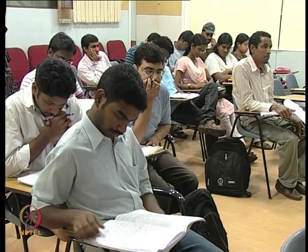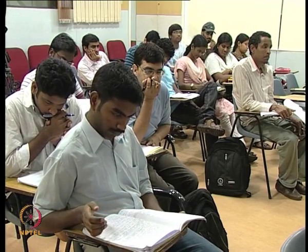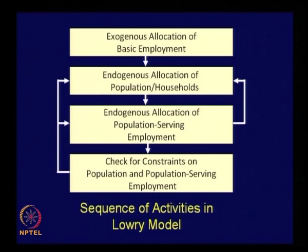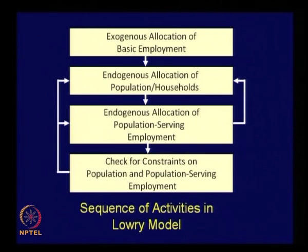The four important steps in the application of Lowry's model are shown in the flow chart. Step one: exogenous allocation of basic employment — these employment locations are fixed based on data collected from various sources. Step two: endogenous allocation of population or households using the model. Step three: endogenous allocation of population-serving employment. Step four: check for constraints on population and population-serving employment zone-wise.